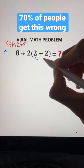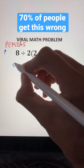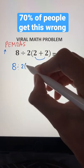So obviously we're going to have to use PEMDAS, which means we're going to have to do parentheses first. So now we have 8 divided by 2 times 2 plus 2, which is 4.